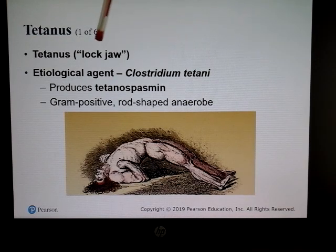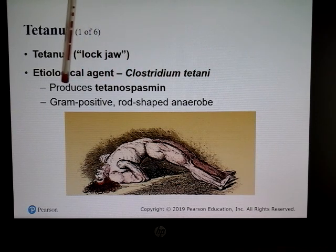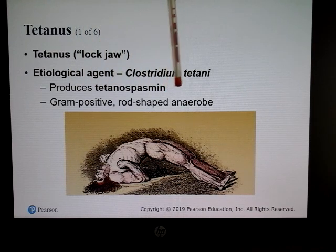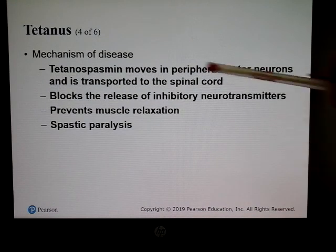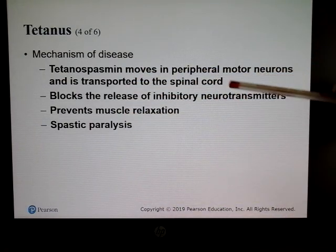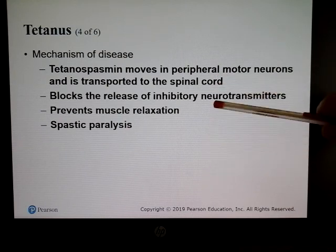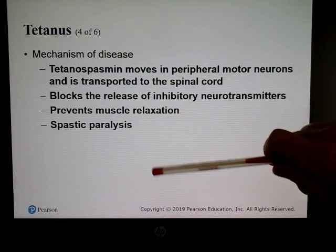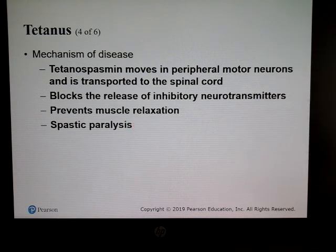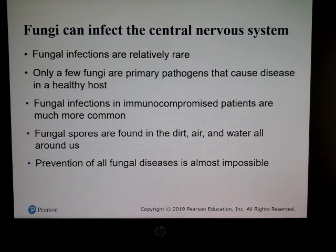Tetanus, also known as lockjaw, is caused by Clostridium tetani. It produces tetanospasmin, a toxin that moves in peripheral motor neurons and is transported to the spinal cord. Tetanospasmin blocks the release of inhibitory neurotransmitters, prevents muscle relaxation, and causes spastic paralysis.